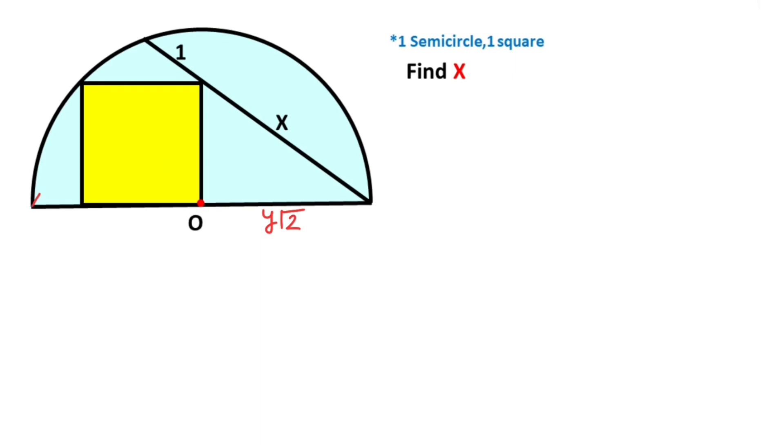After that, if we connect these two corners, this angle is opposite of the diameter, therefore this angle is 90 degrees. Let's call here alpha, alpha, and here theta. We know that alpha plus theta equals 90 degrees, so here this angle must be equal to theta.